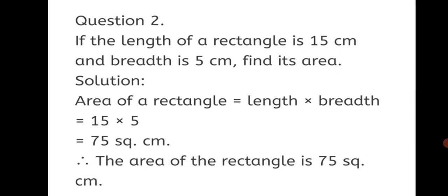Question 2: If the length of a rectangle is 15 centimeters and breadth is 5 centimeters, find its area. Here we have to find the area of the rectangle, so write the formula: area of rectangle is equal to length into breadth. Substitute the values — length is 15, breadth is 5. 15 into 5 gives you 75 square centimeters. Therefore, the area of the rectangle is 75 square centimeters.